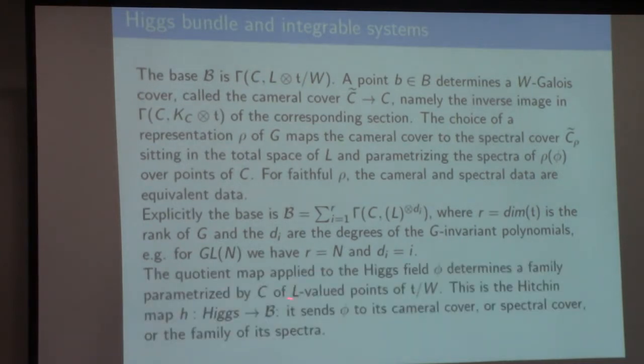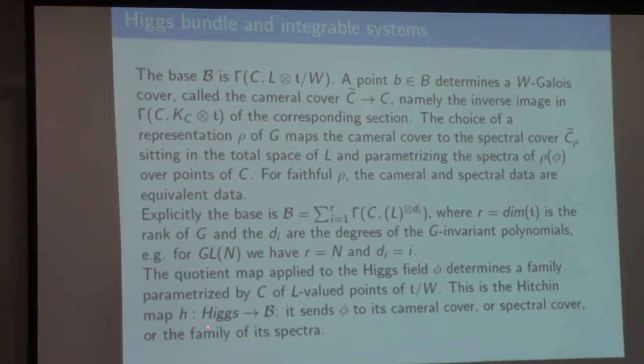The quotient map, or the Hitchin map, takes a bundle with Higgs field and sends it to the family of eigenvalues with W intersection.